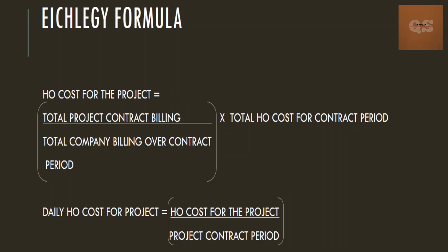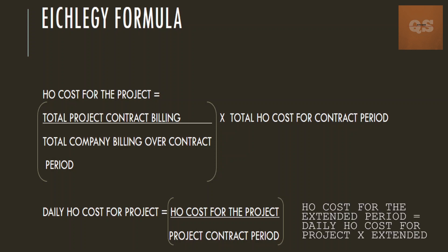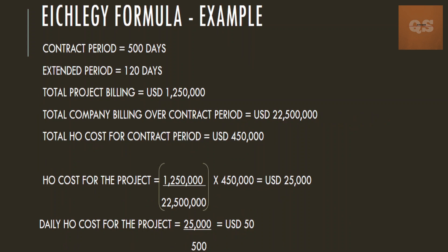Once you find out the head office cost for that particular project, you can find your daily head office cost by dividing that figure by the project contract period. Once you have the daily head office cost, multiplying it by the extended period gives you your head office cost for the extension period.